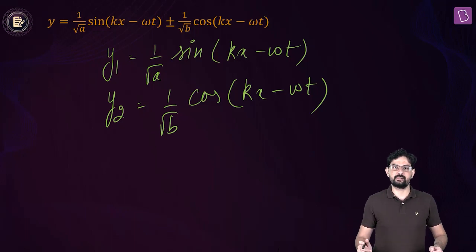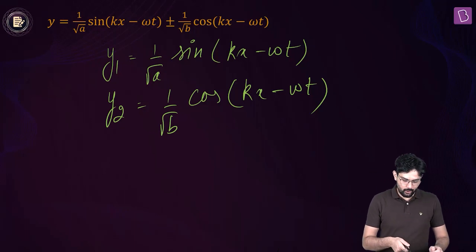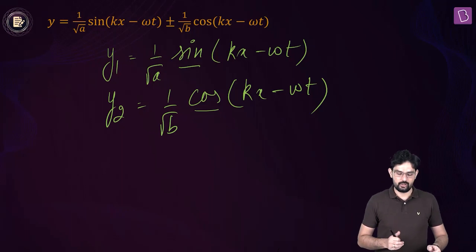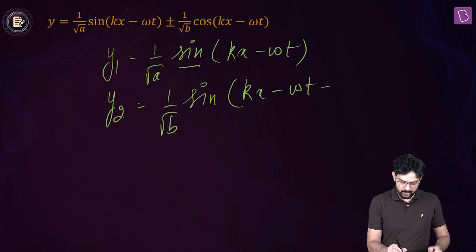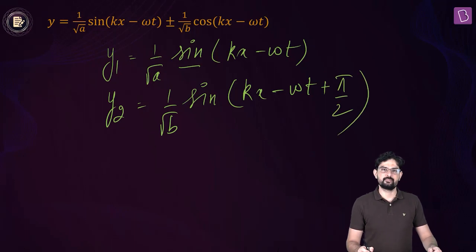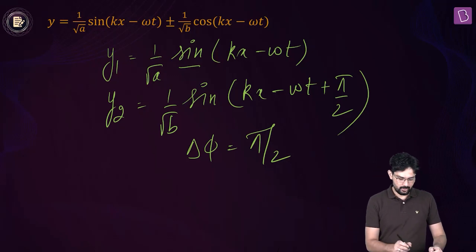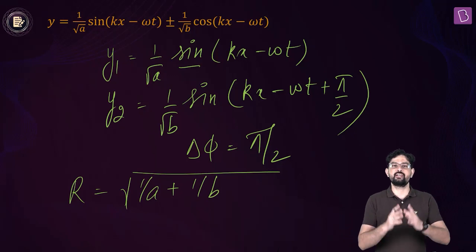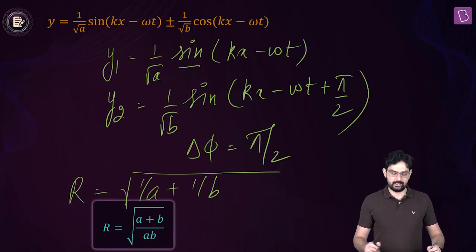What is the phase difference between these two waves? It is not 0, because one wave has cos and the other has sin. To get them in the same form, we express the cosine wave as a sine with an angle of pi by 2 included. So the phase difference between the two waves is pi by 2. The resultant amplitude is the square root of A1 squared, which is 1/a, plus A2 squared, which is 1/b, plus 2 A1 A2 cos of 90, which is 0. So the resultant amplitude is the square root of (a plus b) divided by ab.